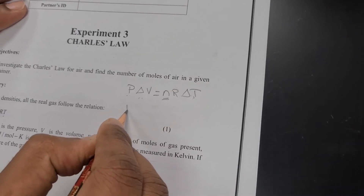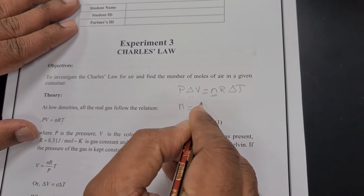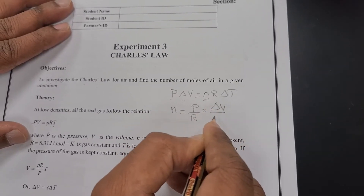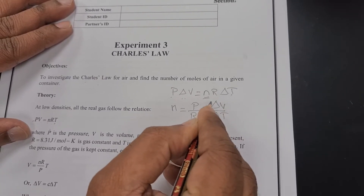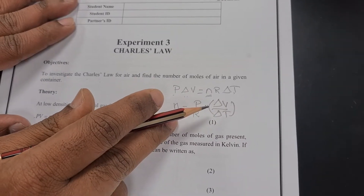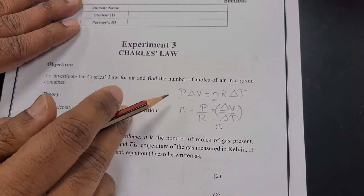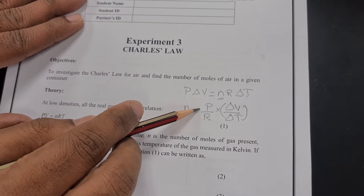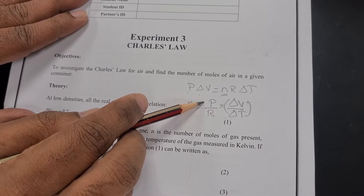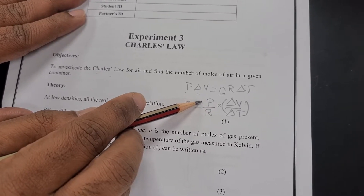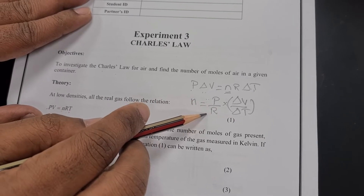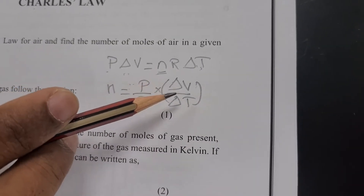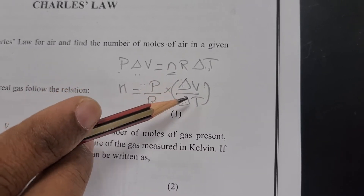Rearranging this equation, n = (P/R) × (ΔV/ΔT), and you are going to get ΔV/ΔT from the graph. This is our data analysis equation, which will be given in your exam paper. The pressure value is atmospheric pressure: 1.01 × 10⁵ Pa. The gas constant R is 8.314, and ΔV/ΔT you will get from the graph.